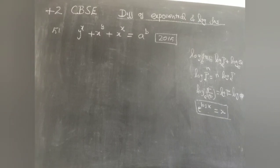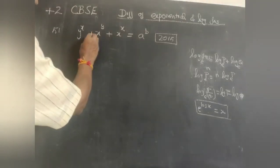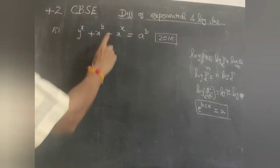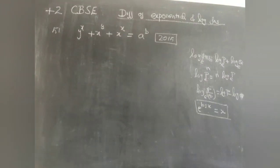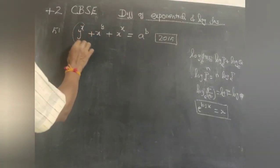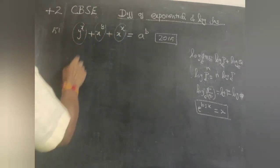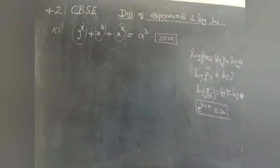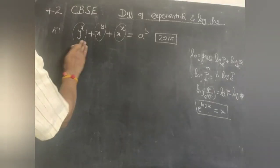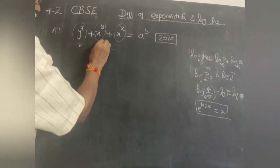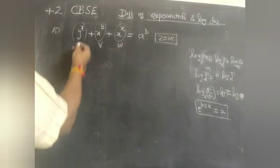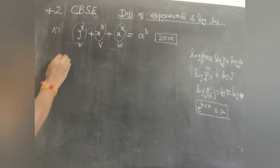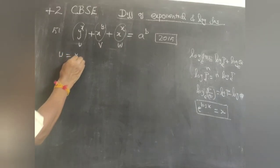Question 51 (asked in 2015): y^x + x^y + x^x = a^b. This is a very important model. Since there is a plus sign between the terms, you cannot take logarithm of the entire expression. You can only take logarithm of each part separately. So let u = y^x, v = x^y, w = x^x.